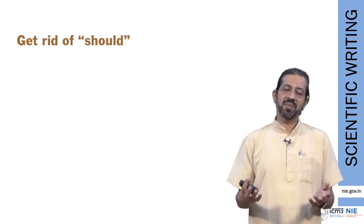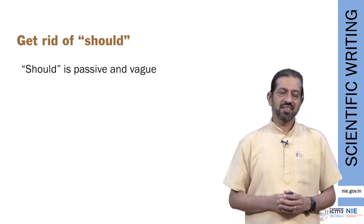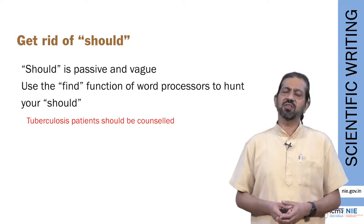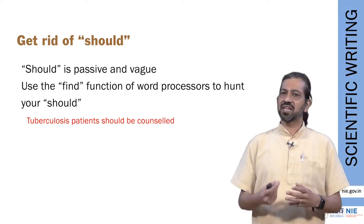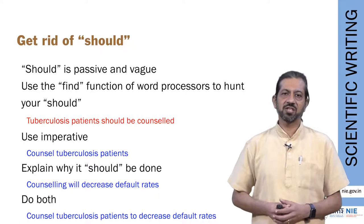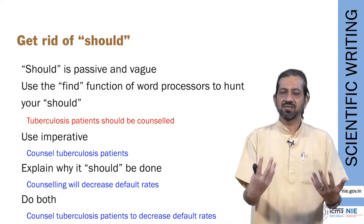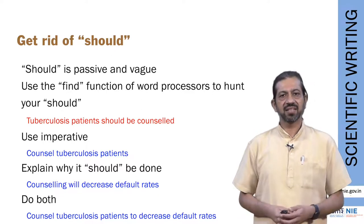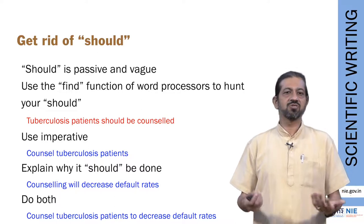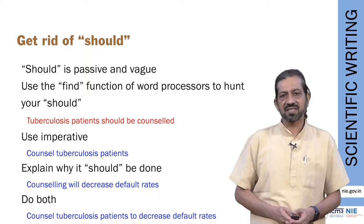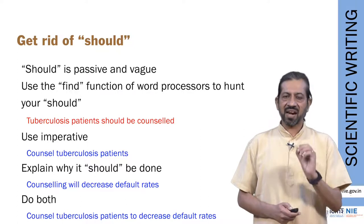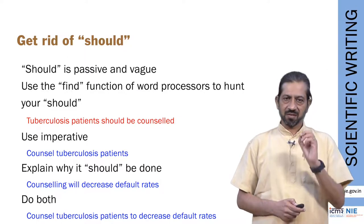A commonly used word in recommendation sections is 'should,' which suggests passiveness. Instead of saying 'tuberculosis patients should be counseled,' which is weak and does not give a sense of direction, a better way is to be straightforward: 'counsel the tuberculosis patients in order to decrease the default rates.' This sentence is more straightforward, stronger, and clearly drives home the message from your study.